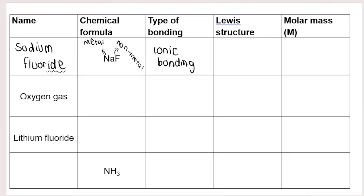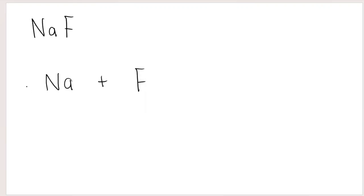Then they want the Lewis structure — the final diagram for sodium fluoride. I'm going to draw the in-between steps as well just to show you how we get there. When we are drawing Lewis dot diagrams or Lewis dot structures, we use valence electrons. If you need a recap on this I will link my video above where I go through ionic bonding Lewis dot structures.